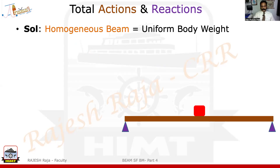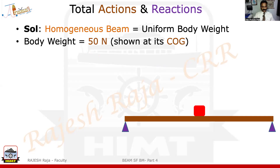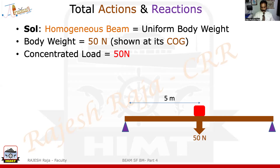What is the meaning of homogeneous beam? The body weight is uniformly distributed. When uniformly distributed, we know from our ship's calculation that whenever something is uniformly distributed, I can consider the body weight to be acting at the center of gravity. So for me, center of gravity is exactly midway at 5 meters. Including this, I have a concentrated load of 50 Newtons. So the total action in this question is 100 Newtons.